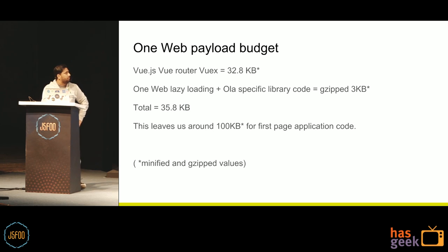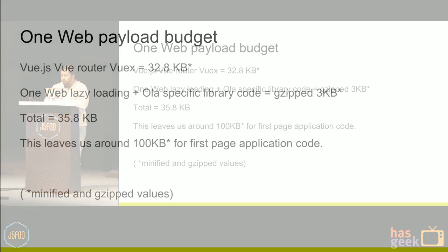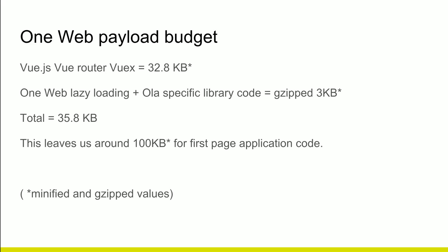Let's talk about the performance metrics of OneWeb. Google performance standards say you can afford to send only around 130 to 150 KB of JavaScript on a median internet connection — that is a slow 3G connection with 400 Kbps speed and 400ms RTT on a Motorola G4 phone. The OneWeb footprint: the common library is around 33 KB, some lazy loading and Ola-specific library code is around 3 KB gzipped — all values are in gzip — totaling around 36 KB of library files. This leaves a healthy 100 KB of application code that we can send during the critical rendering path, ensuring all performance patterns are baked in.